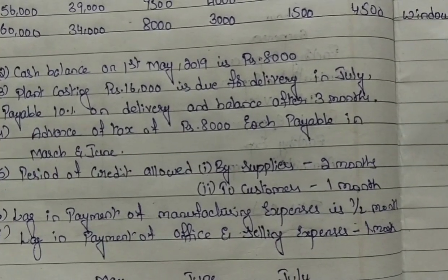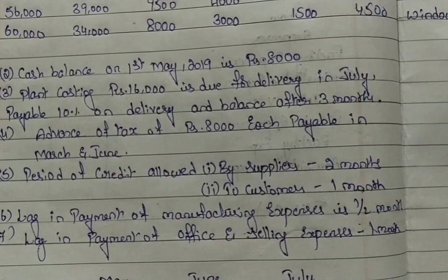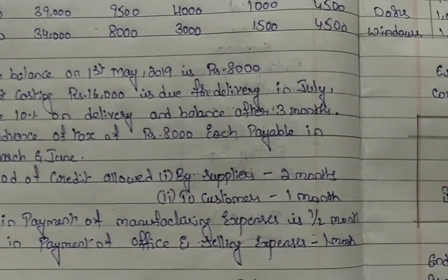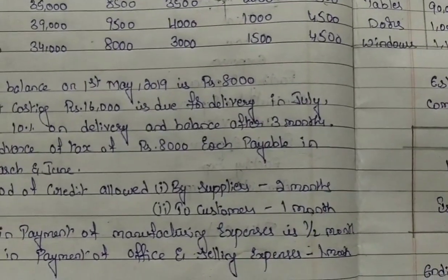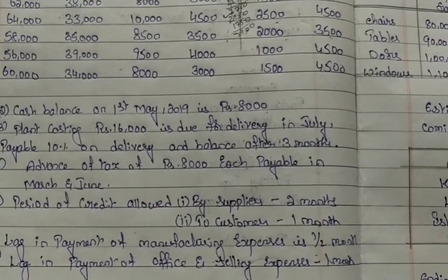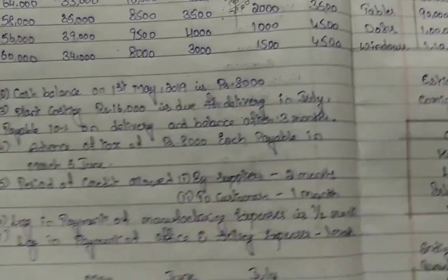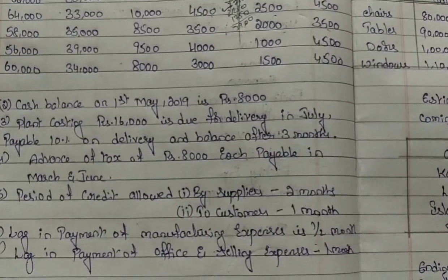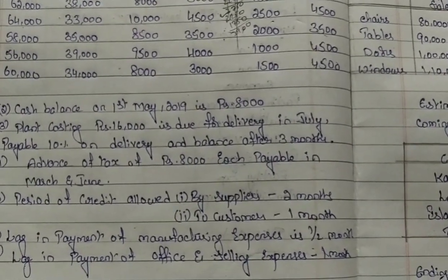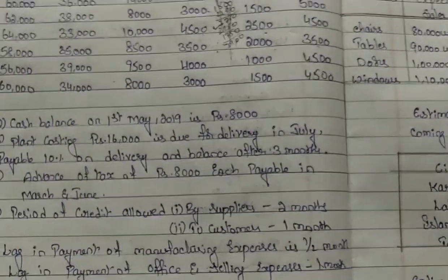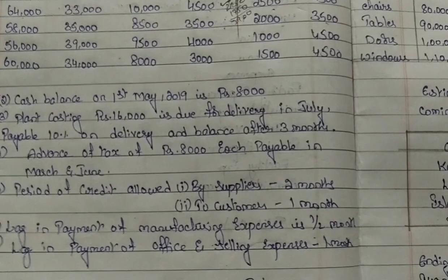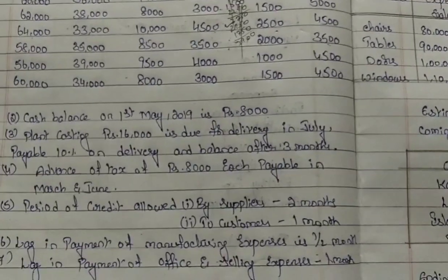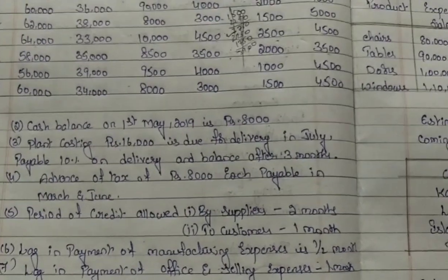The fifth point: the period of credit allowed by suppliers is two months and to customers is one month. Suppliers indicates credit purchases and customers indicates credit sales. The company gives customers one month to repay, while suppliers give the company two months. The sixth point: lag in payment of manufacturing expenses is half a month — half is paid in the current month and half in the next month. Lag in payment of office and selling expenses is one month — this month's expenses are paid in the next month.